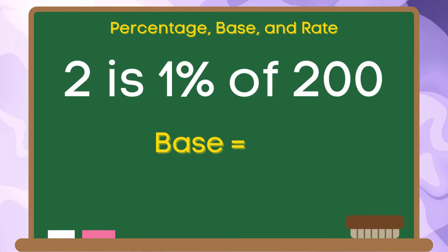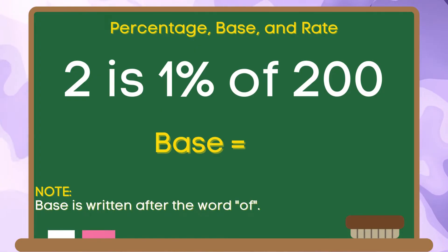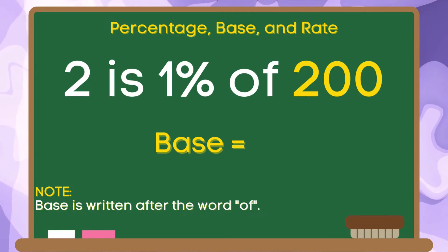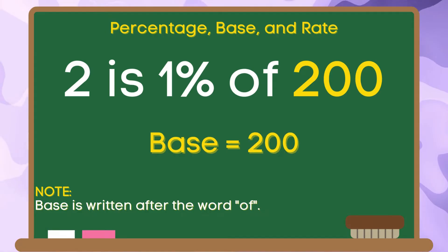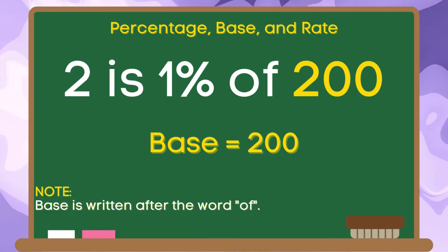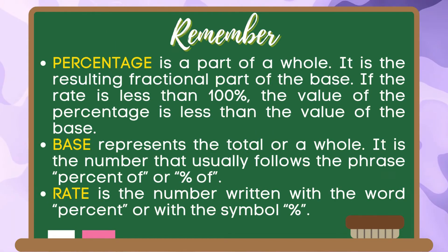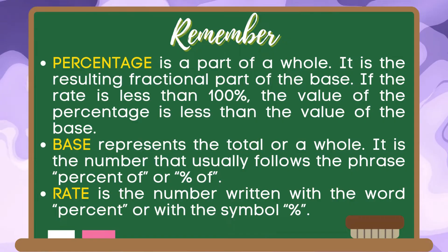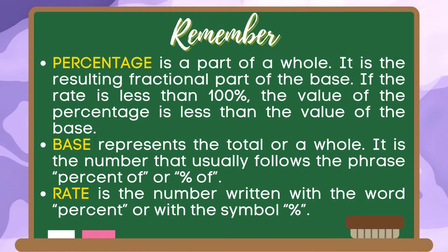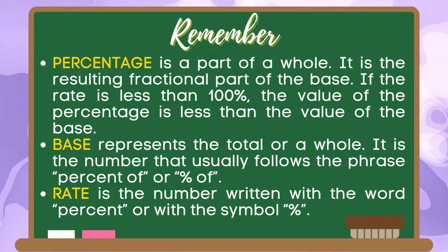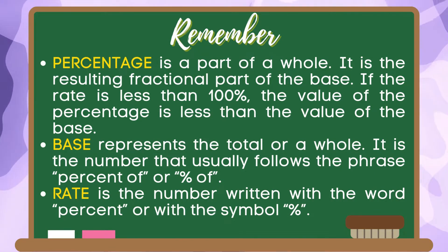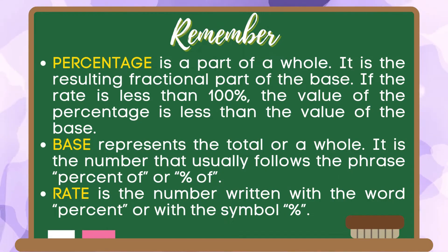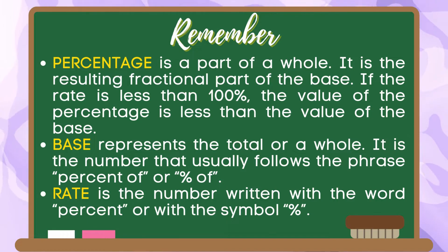Now let us identify the base. Take note that the base is written after the word 'of.' As you can see, 200 is written after the word 'of.' Therefore, the base is 200. Remember: percentage is a part of a whole — the resulting fractional part of the base. Base represents the total or a whole and follows the phrase 'percent of.' Rate is the number written with the word percent or with the percent symbol.